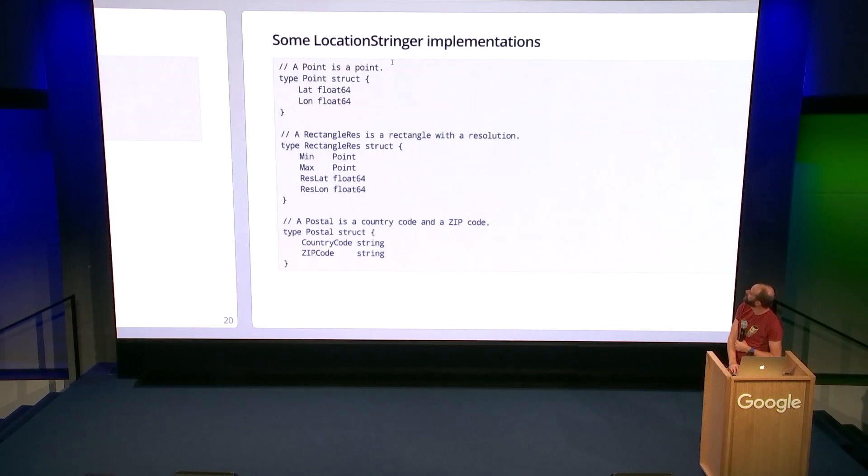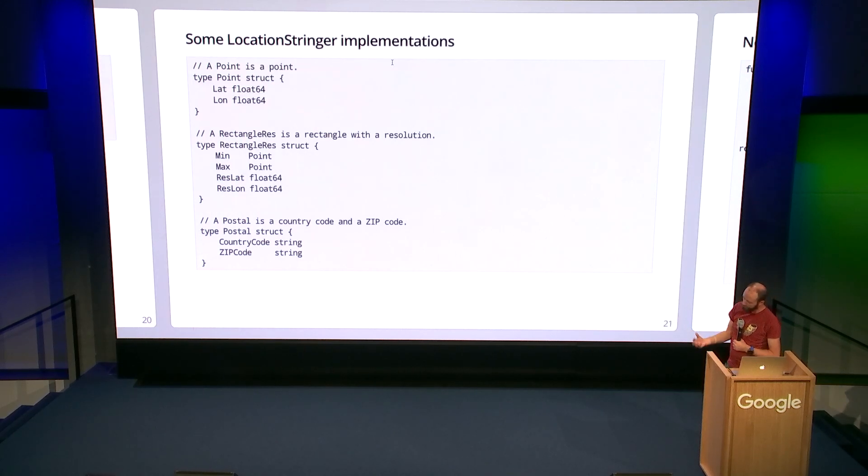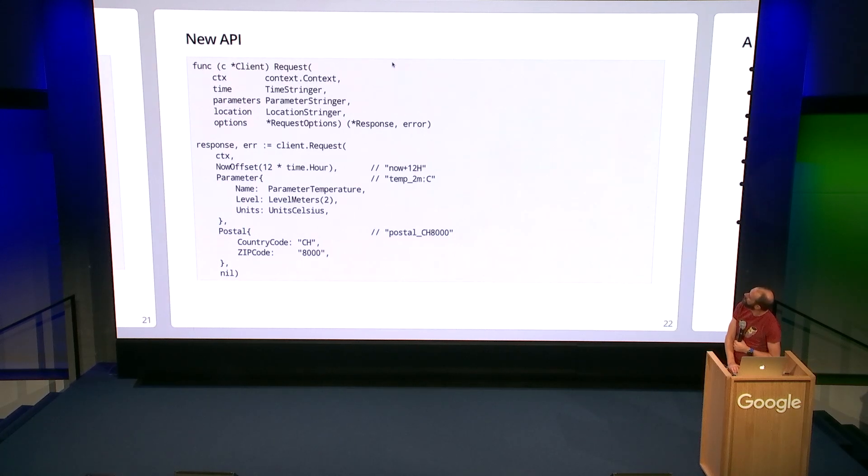Similarly, we do exactly the same thing with location. Here's some of the example locations that we use. And using these, this is what our new API looks like. Instead of three different string parameters, we take three different interfaces. And this is what using our API looks like. And you can see now it's much more fluent. We get to use high-level Go structs. The first one is a type conversion for a time.duration into a now offset. The second one is a struct which happens to implement the parameter stringer type. And the last one is another Go struct which implements the location stringer type.